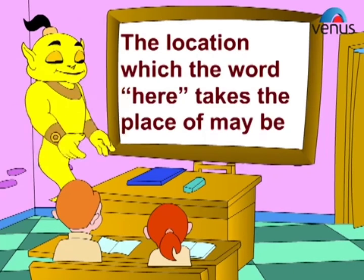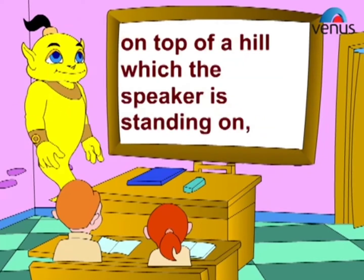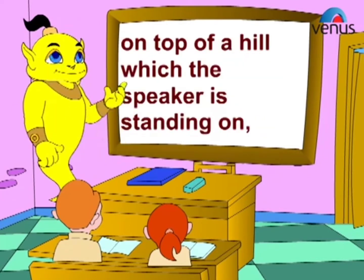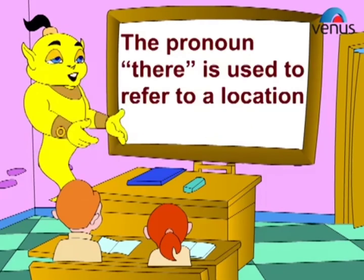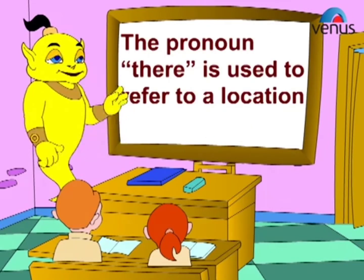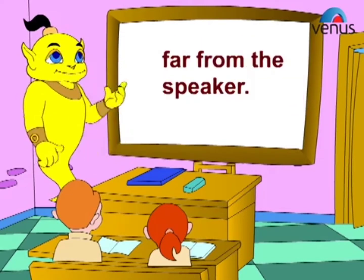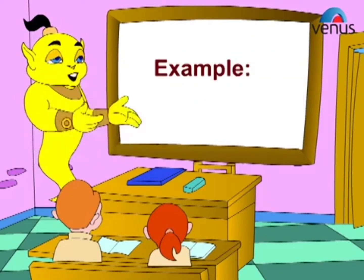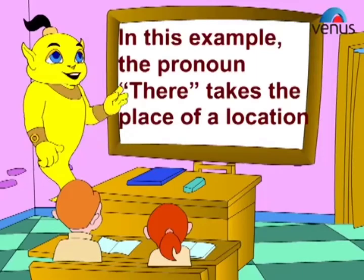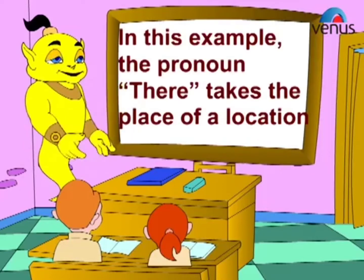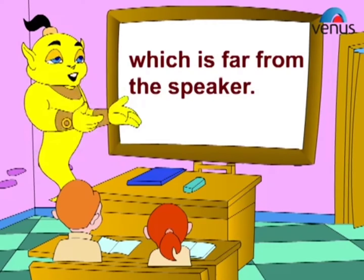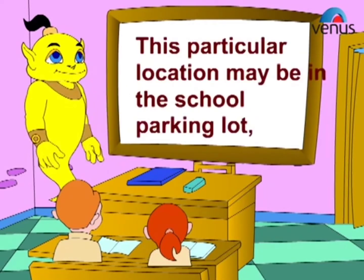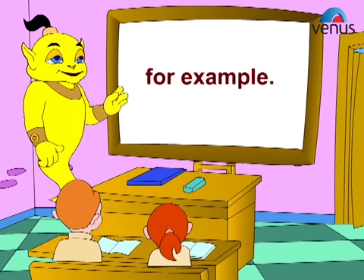The location which the word 'here' takes the place of may be on top of a hill which the speaker is standing on, for example. The pronoun 'there' is used to refer to a location far from the speaker. Example: There is my car. In this example, the pronoun 'there' takes the place of a location which is far from the speaker. This particular location may be in the school parking lot, for example.